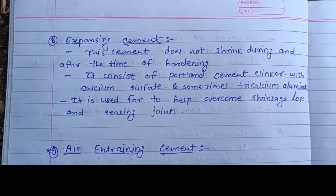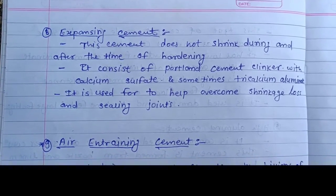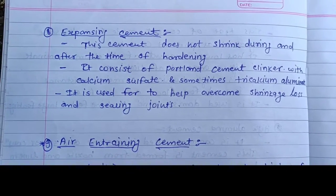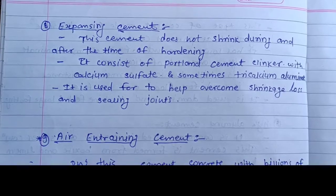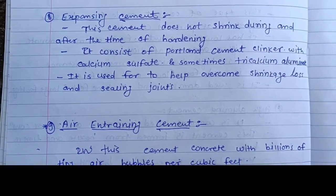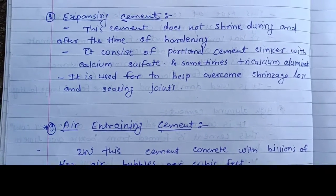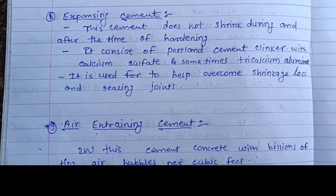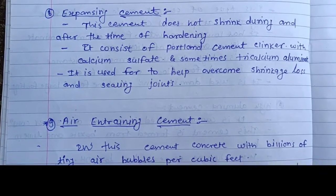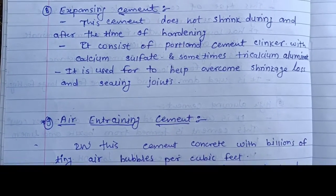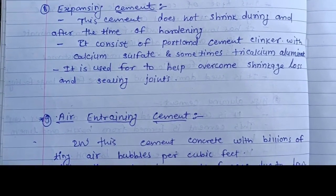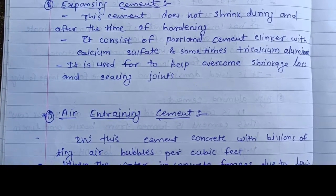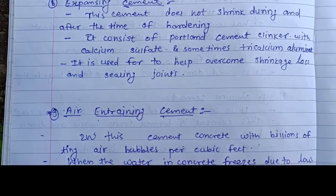Expansion cement does not shrink during and after the time of hardening. It consists of Portland cement clinker with calcium sulfate and sometimes tricalcium aluminate. It is used to help overcome shrinkage loss and for sealing joints.